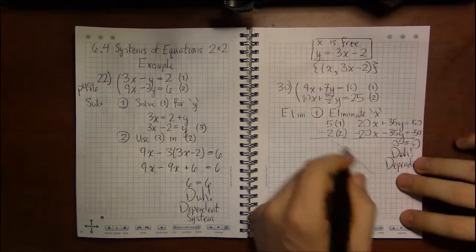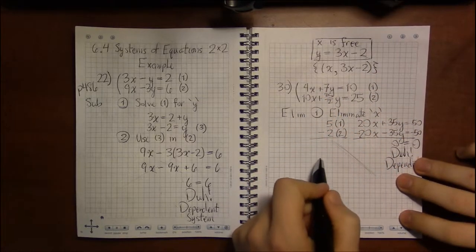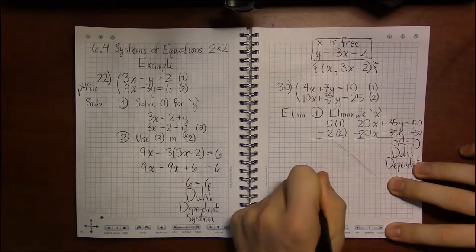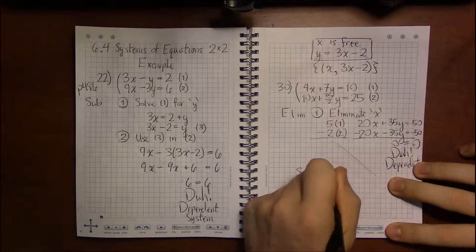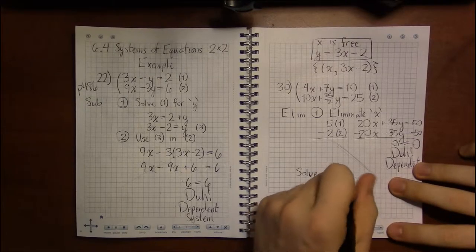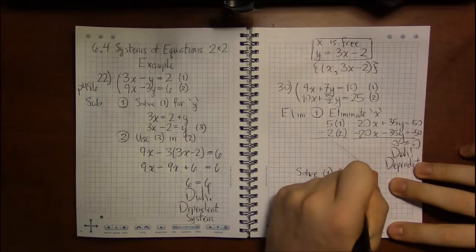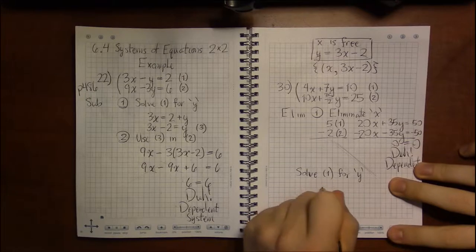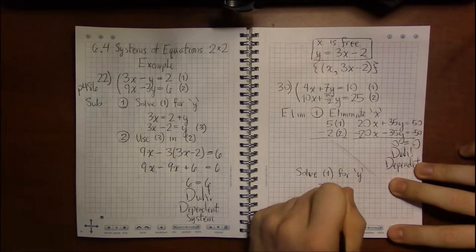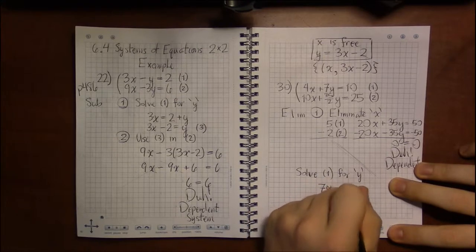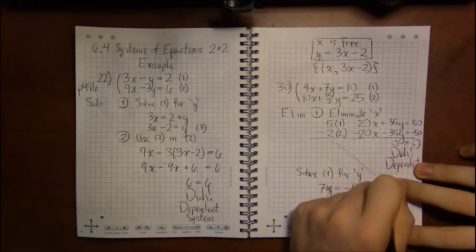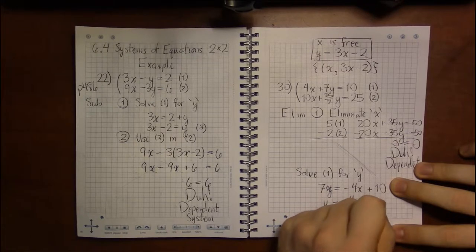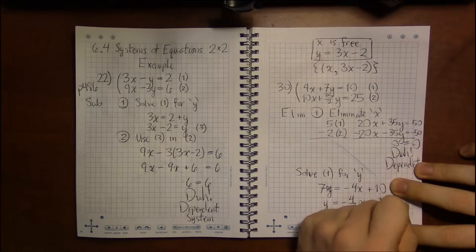So to find out what that line is, let's solve for y in one of these equations, which is why I wanted to do substitution originally. So if we solve equation 1 for y—you could solve for x, it doesn't really matter, but we're more familiar solving for y, so why not. I'm going to have to subtract 4x from both sides. 7y = -4x + 10. And then dividing everything by 7, I get y = (-4/7)x + 10/7.